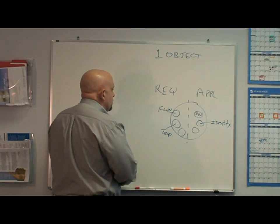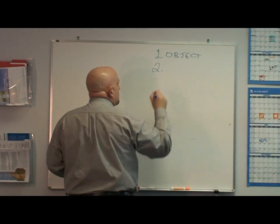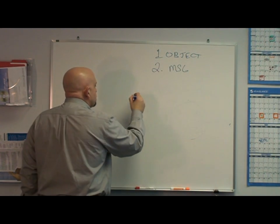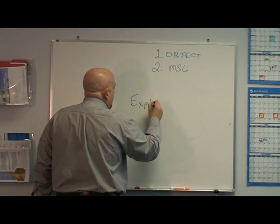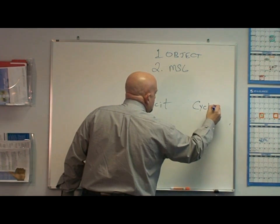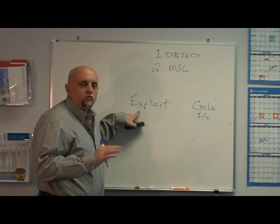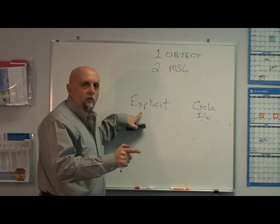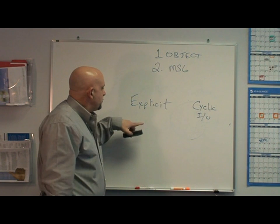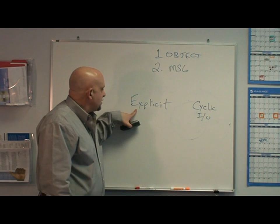That's number one. Number two is messaging. There are two types of messaging: explicit messaging and cyclic or I/O messaging. Explicit messaging is a message that goes right to the object and says, for example, 'I want to read or write object 64, attribute 2.' You can open up the packet and see what's in it — that's an explicit message.